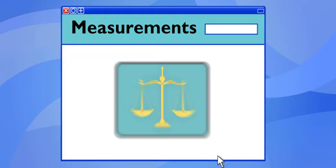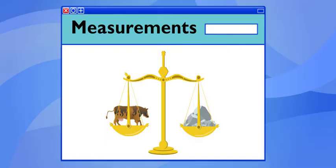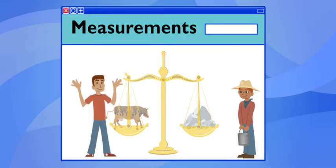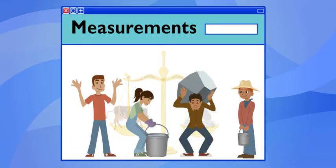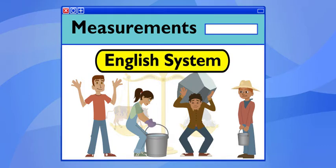And would you believe the English measured weights with stones and liquids by the pailful? But how could that work? People are all different sizes, and I bet they used different sized stones and pails. They did. Measurements were all over the place, until the English set up a system of standard units that made all measurements consistent.